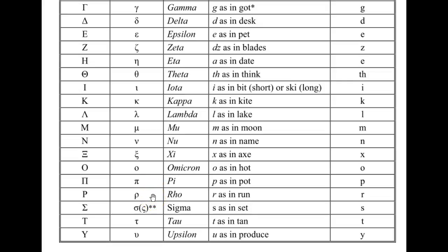Rho sounds like R as in run. Sigma — S as in set. The first sigma is the form that shows up at the beginning or middle of a word, and the form in parentheses is used at the end of a word — it's called the final sigma.